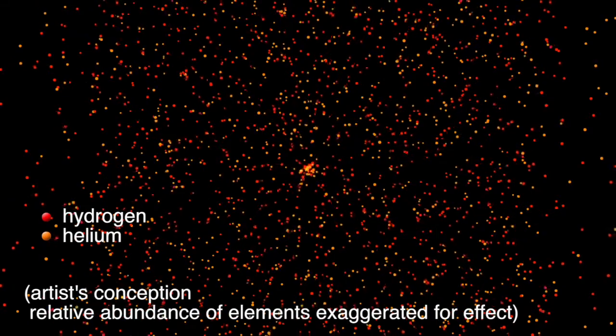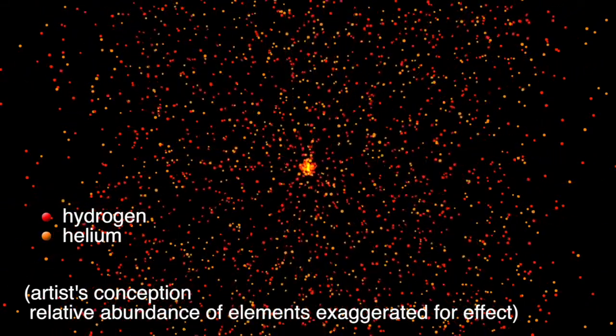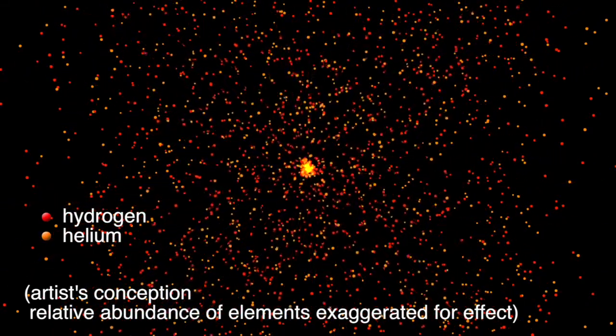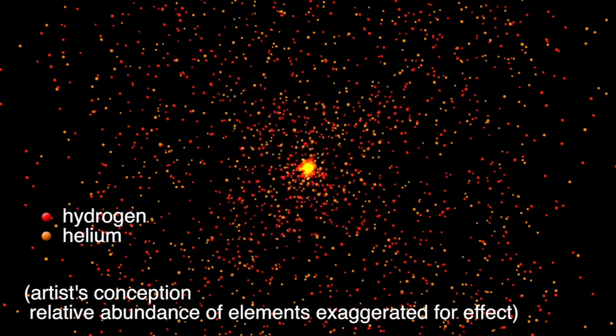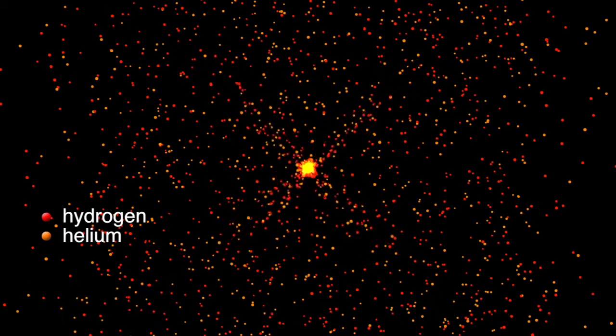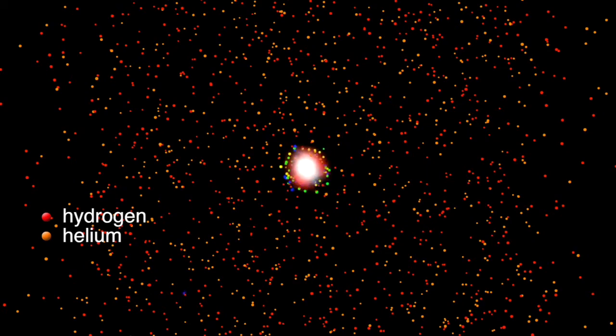Stars mirror the chemical composition of the galactic gas from which they were born. The very oldest stars consist almost entirely of the two lightest elements, hydrogen and helium. They were born before ancient supernova explosions built up significant amounts of heavier elements.